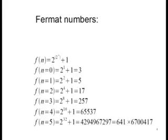Anyway, the Fermat numbers. They are 2 to the power of 2 to the power of n, plus 1. For n=0, it's 3. For n=1, it's 5. For n=2, it's 17. For n=3, it's 257. For n=4, it's 65,537. And that is how far Fermat managed. All these numbers are prime. So from that you could infer that this sequence is purely prime numbers. And if he had managed to calculate one more, he would have found that this is false.